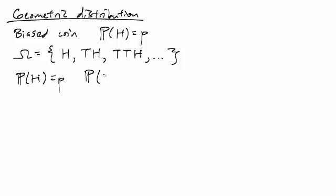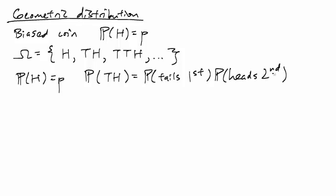So what about the probability of tails and then heads? Well, since the tosses are independent, this is just going to be the probability of tails first and then heads second. This product is because these two coin flips are independent, and so this is just going to be 1 minus P times P.